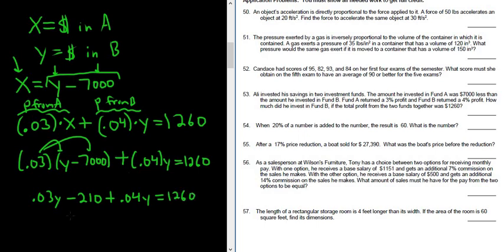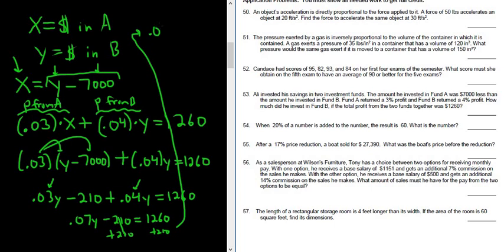Now we can combine the Ys. We have 0.03Y plus 0.04Y. That's 0.07Y minus 210 equals 1,260. We add the 210 to the other side, so plus 210. So 0.07Y equals, and then 1,260 plus 210 is 1,470.